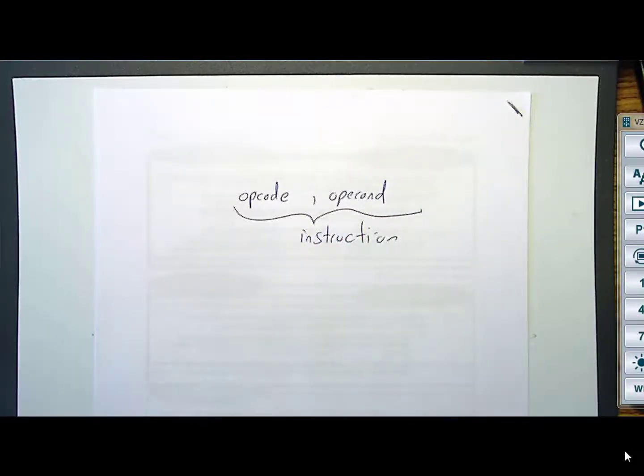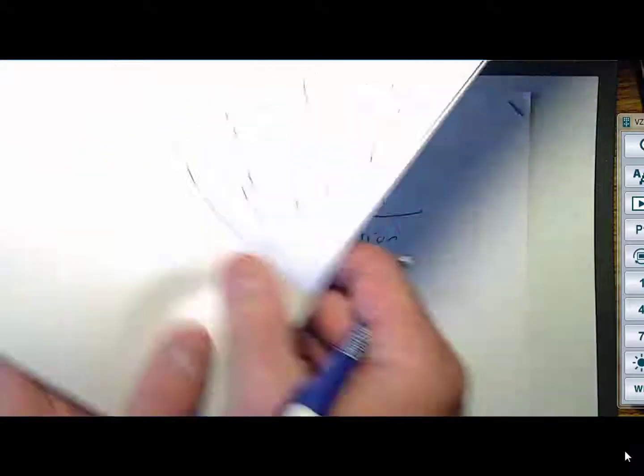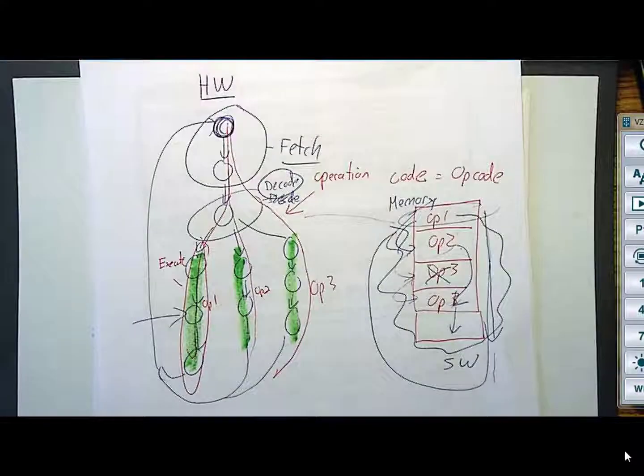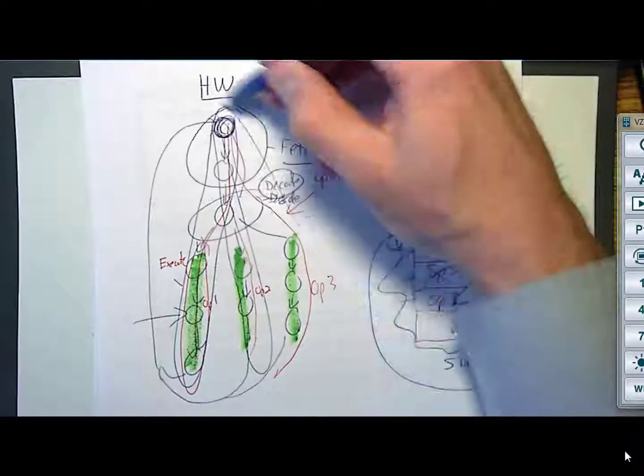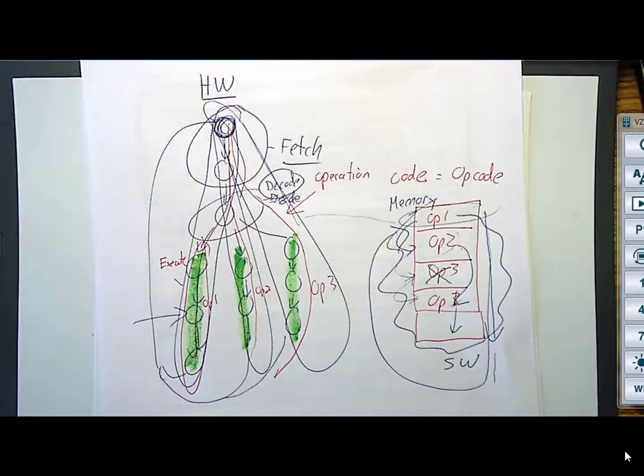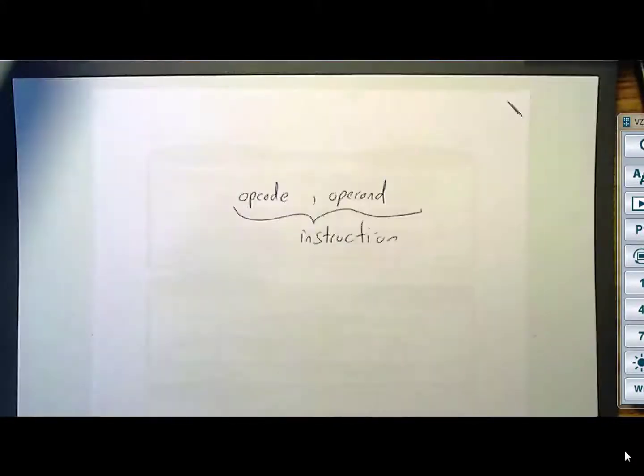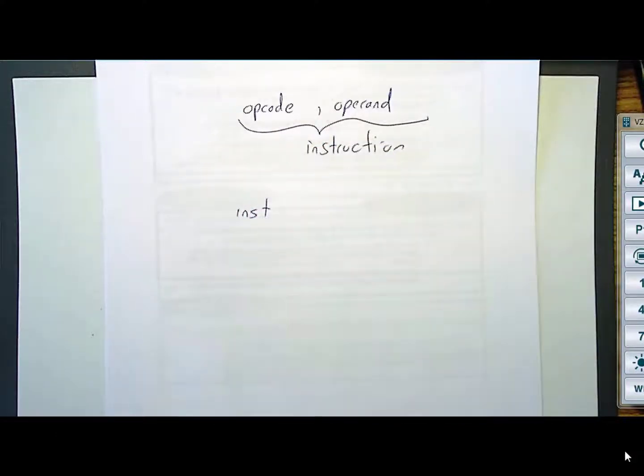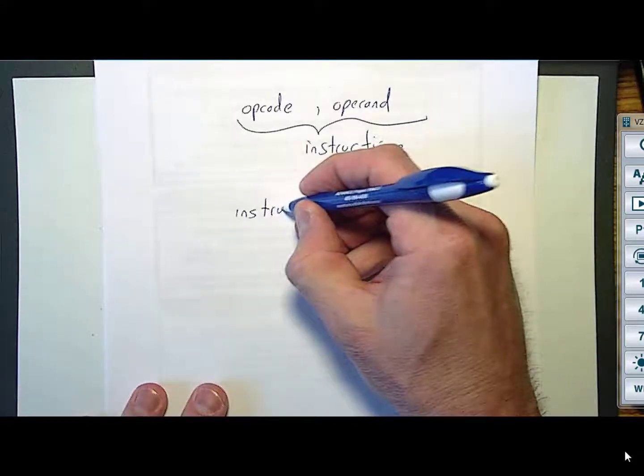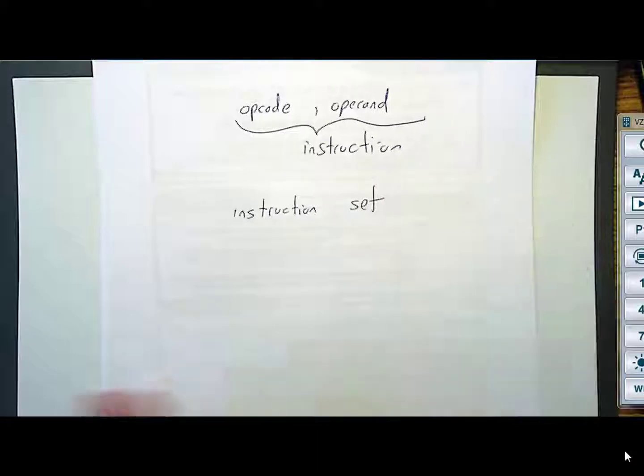Now, this is an instruction. You design the computer to execute instructions. When I come back to the original drawing, this right here was an instruction. You design how many instructions your computer needs in order to be useful. You know what you call all of the instructions that you created and decided to bundle up into one computer? It's called the instruction set. Pretty simple. There's actually two philosophies on instruction sets.